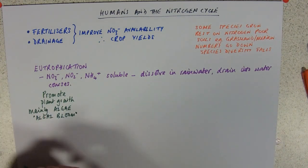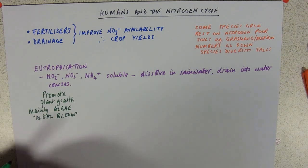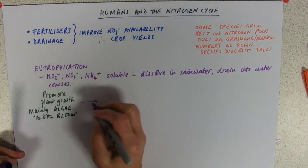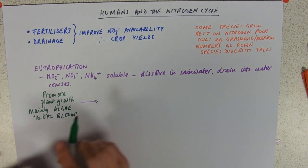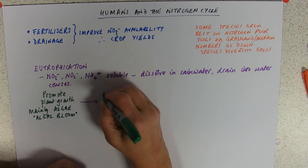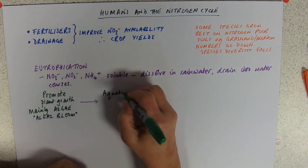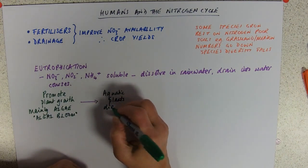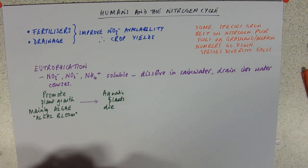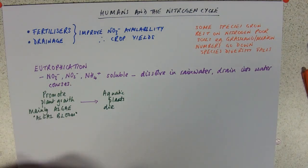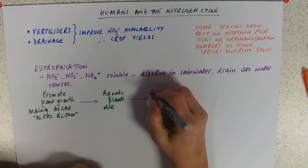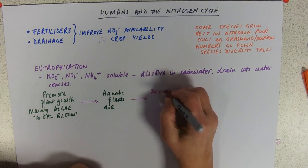The next stage is that there's no light getting to the bottom or to the aquatic plants living under the water. Those aquatic plants die, and everything dead goes to decomposers, so the decomposer population starts to rise.